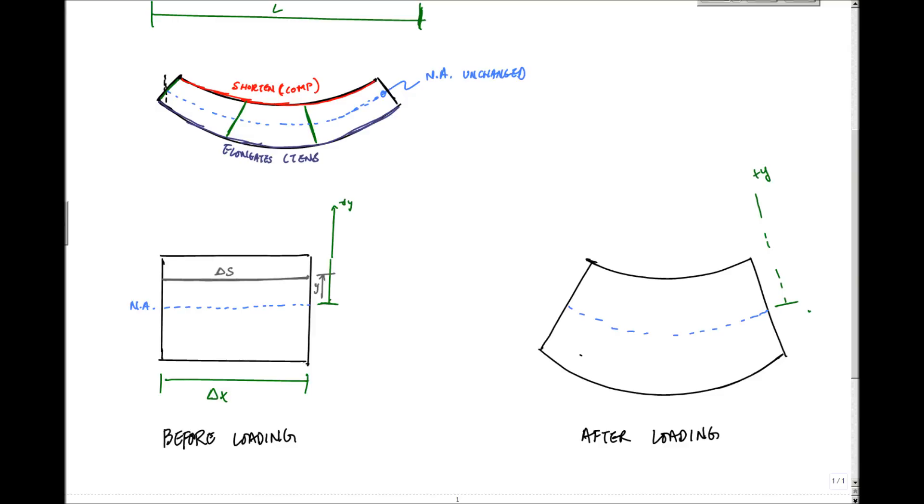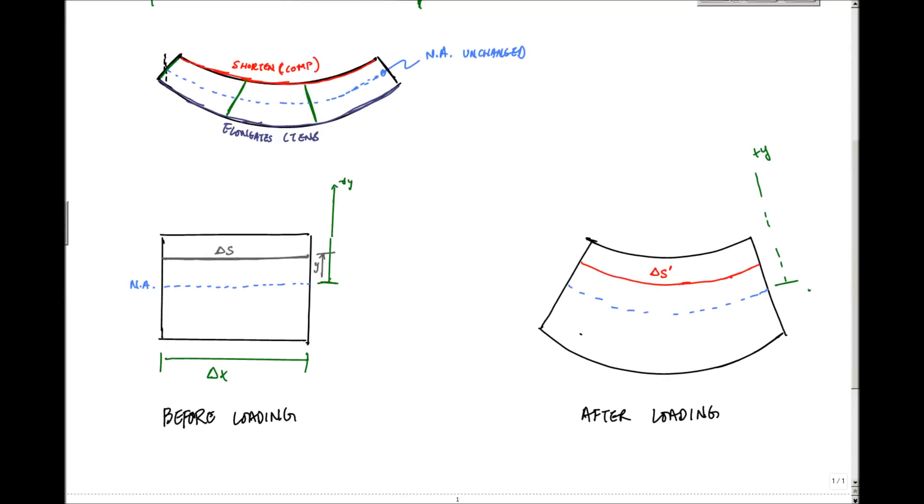And here, this delta S segment becomes this segment, and it has a new length, because we've observed by bending something that the line actually shortens delta S prime. Some new length, some new delta S right here, and then this neutral axis line, this neutral axis remains unchanged. It's still a length delta X. This is still delta X.